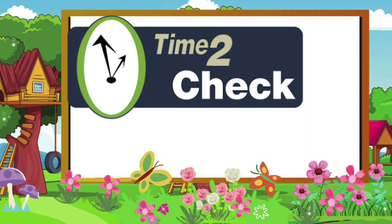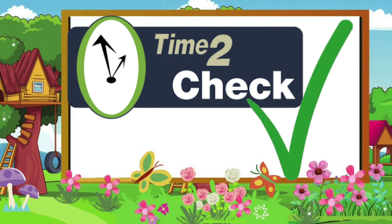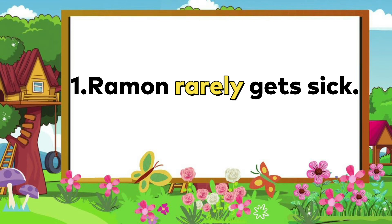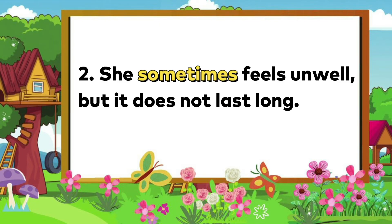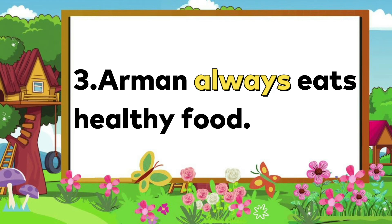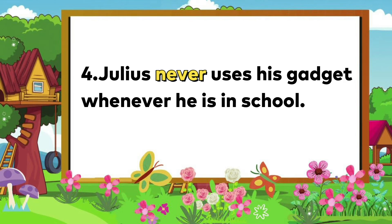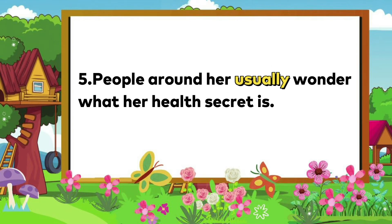Time's up. Are you done? Alright, let's check. Number 1: You may rewrite it as 'Ramon rarely gets sick.' For number 2: 'She sometimes feels unwell, but it does not last long.' You got it right! For number 3: Your answer could be 'Ramon always eats healthy food.' Number 4 can be rewritten as 'Julius never uses his gadget whenever he is in school.' And for number 5: 'People around her usually wonder what her health secret is.' That is correct!